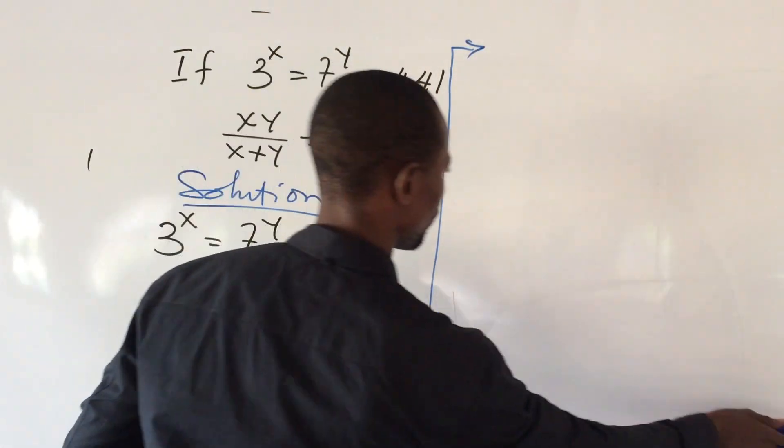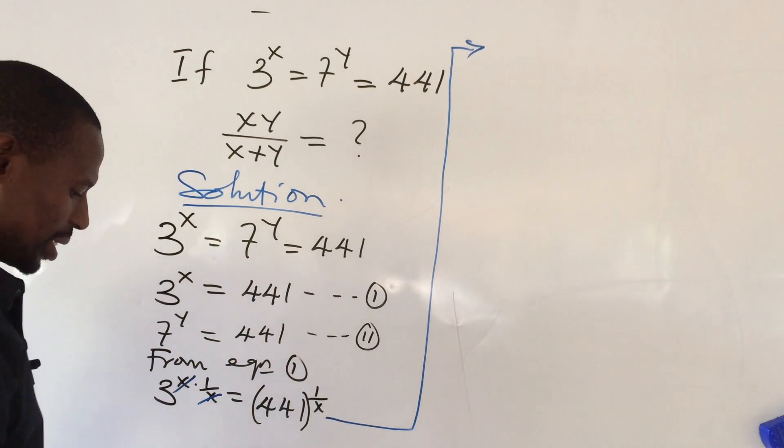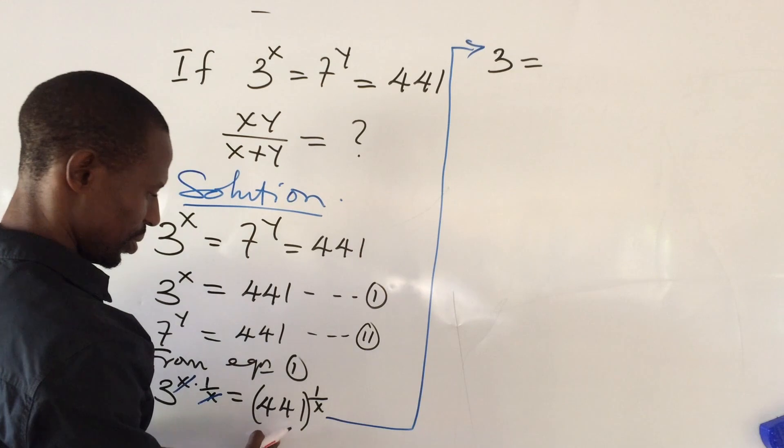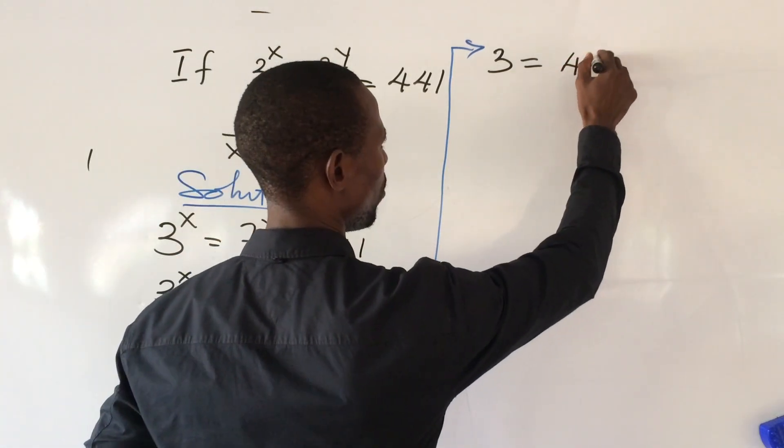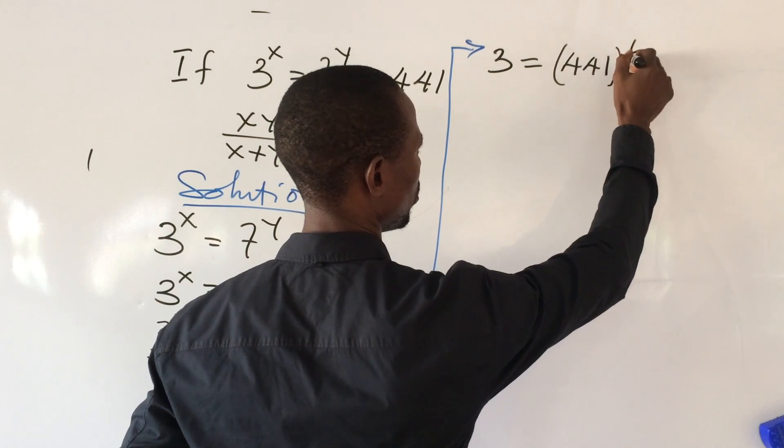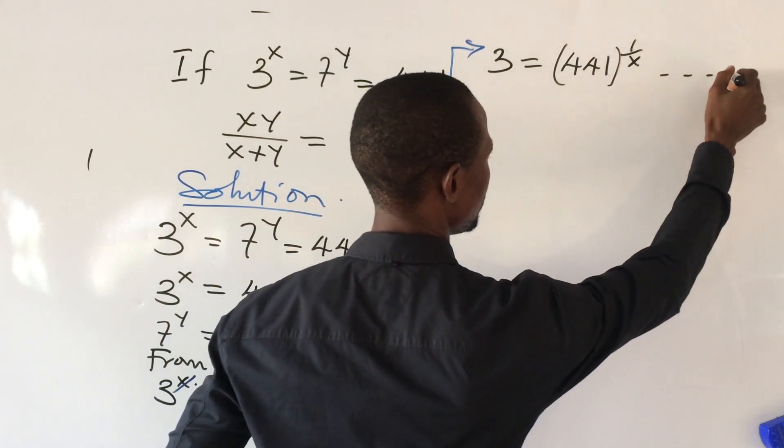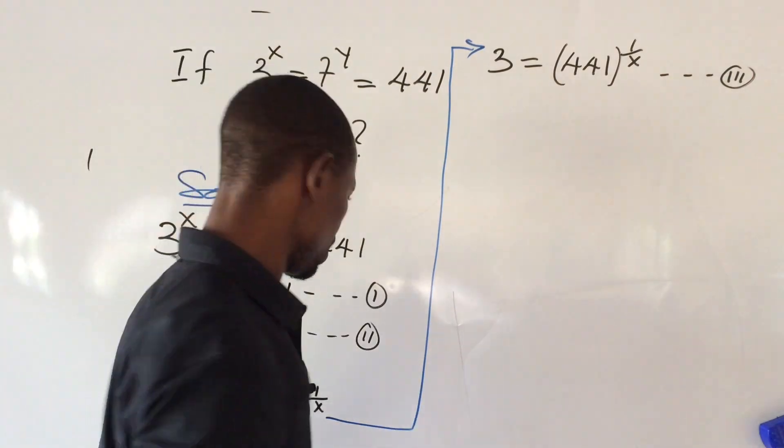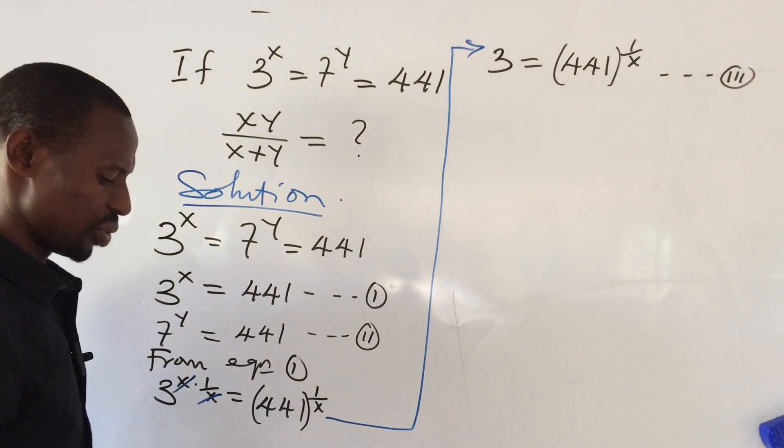This will now give us 3 equal to 441 all to the power of 1 all over x. Let's give this equation 3. So if we turn this equation 3, we do same to our equation 2.